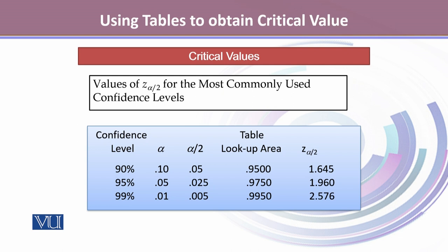The most commonly used Z alpha by 2 values for certain confidence levels are given here. Since the 5% level of significance is one of the most commonly used levels of significance, that translates into 95% confidence interval or confidence level. We see that alpha reflects one-tailed and alpha by 2 reflects two-tailed.